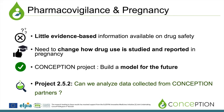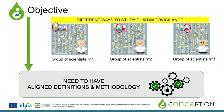In our project 2.5.2, we are wondering if we can gather and analyse data collected from CONCEPTION partners. Every partner is illustrated here as a group of scientists. They all have their own way to perform pharmacovigilance and their own results — all relevant but different. That's why we need to have a line definition and methodology.